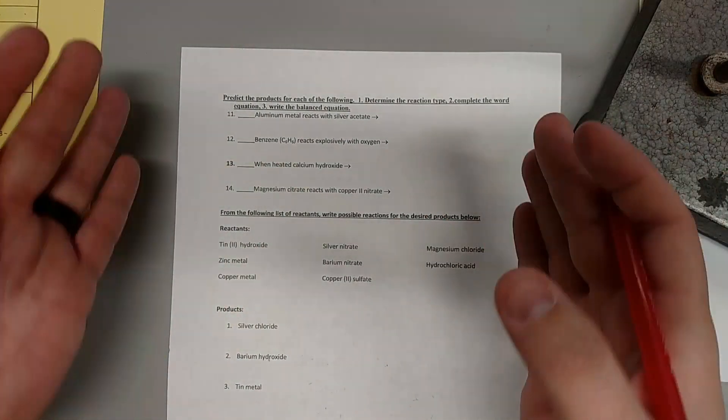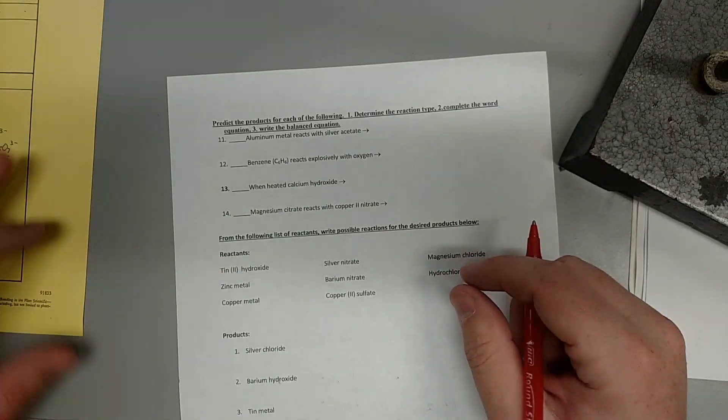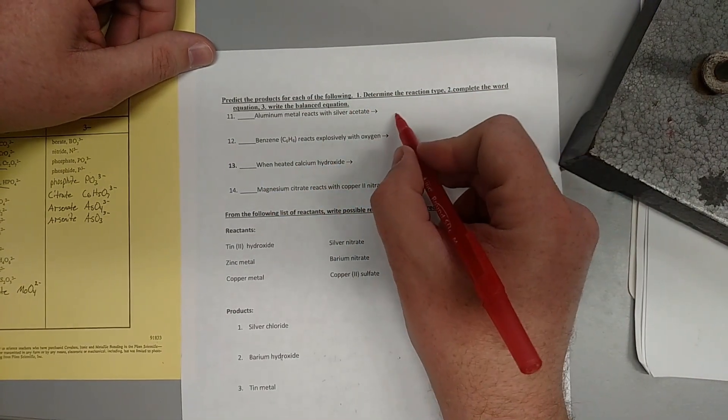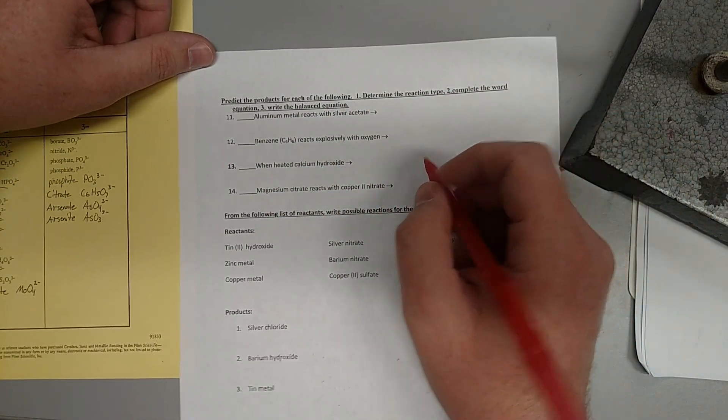Now the hard part of unit 4, predicting the outcome. So we have our word equations again, but we have to predict what the products will be because it doesn't tell us.